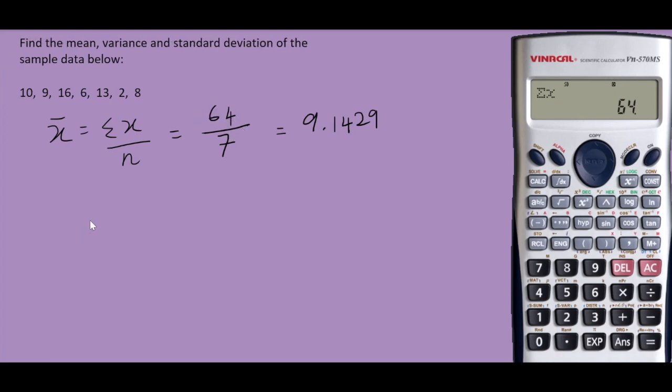And next, to find the sample variance, the formula is summation of X square minus summation of X square over N, over N minus 1.